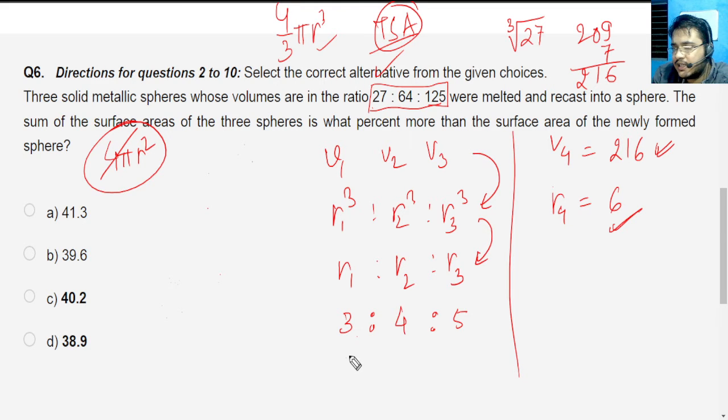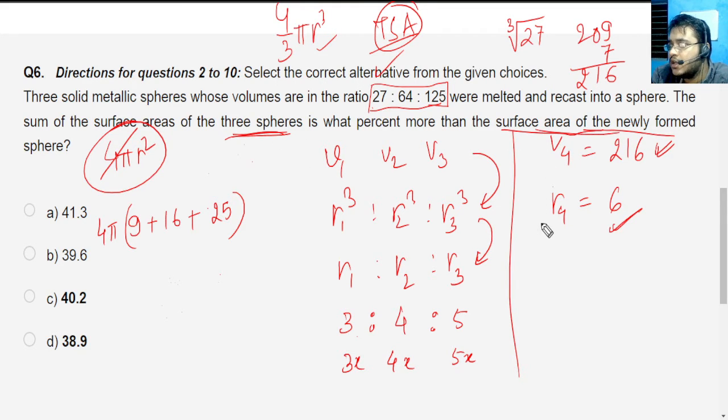If I take the first sphere, I can just take it as 3x, this one as 4x, and this one as 5x. So 4πr² for this one, I'll just write the square version of it. This will be 9 + 16 + 25, and obviously there will be 4π taken common. This is the total surface areas of the three spheres. Now I need to calculate the surface area of the newly formed sphere, that will be 4π into 6² which is 36.